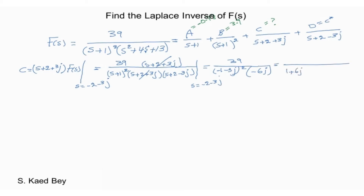Using the cover-up method, we can find the coefficients. Evaluating the fraction at s equals minus 2 minus 3j, we get the following. We then further simplify the expression and eliminate j in the denominator by multiplying by its conjugate.